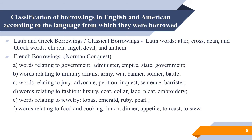Classical borrowings include Latin words such as 'altar', 'cross', and 'dean', and Greek words such as 'church', 'angel', 'devil', and 'anthem'. Latin and Greek borrowings also appeared in English during the Middle English period due to the great revival of learning — these are mostly scientific words since Latin was the language of science at the time. Some of them were partly assimilated grammatically, for example 'formula'/'formulae'. Here also belong words such as 'memorandum', 'minimum', 'maximum', and 'veto'.